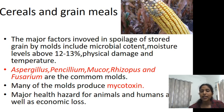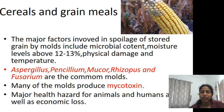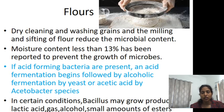Aspergillus, Penicillium, Mucor, Rhizopus, and Fusarium are the most common molds found on stored grains. Many of these molds produce mycotoxins, which are a major health hazard for both animals and humans. Spoilage also results in significant economic loss, as a poor-quality product cannot be exported or sold.